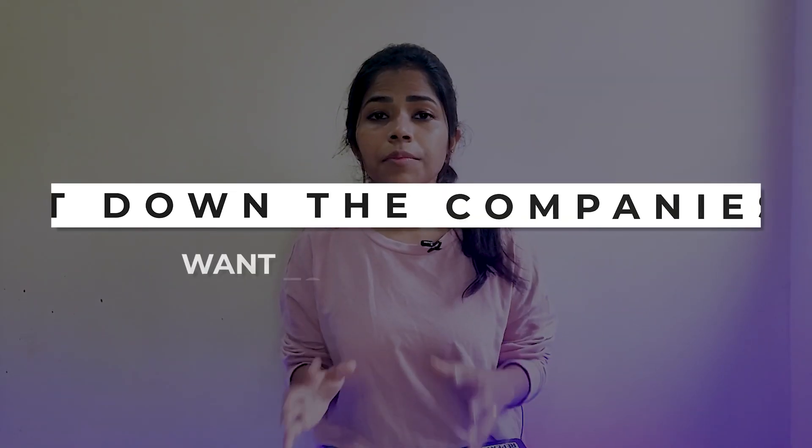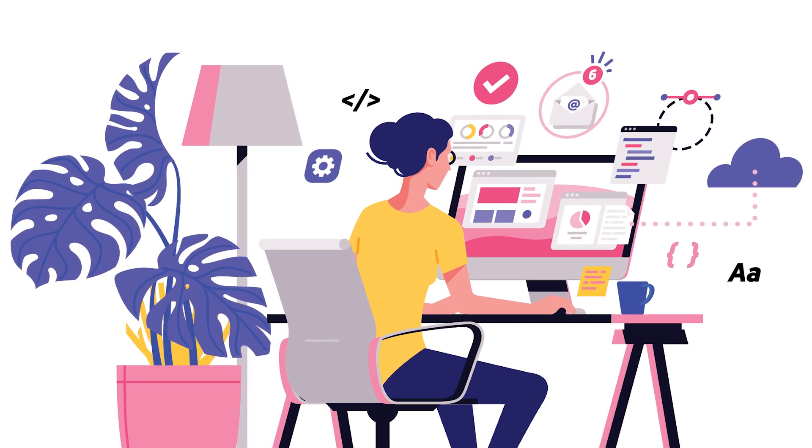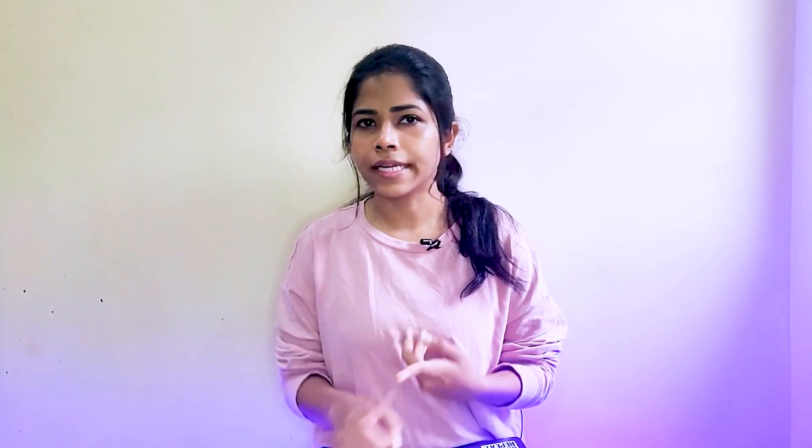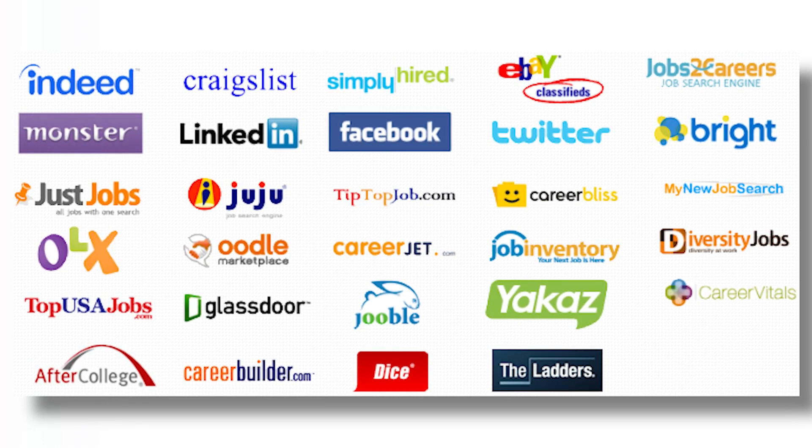Number two: list down the companies you want to apply to. Sort out around 40 to 50 companies with open positions. You can use LinkedIn, Angel.co for startups, Naukri, Monster, Glassdoor — any platform where UX and design openings are listed. List them all, around 40 to 50 companies. Consider your experience level — whether you have 1 to 2 years — and list them all. Then prioritize them.